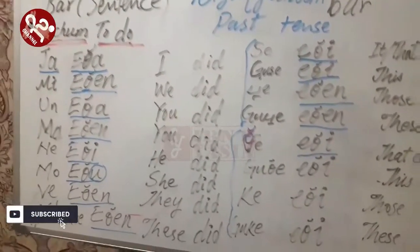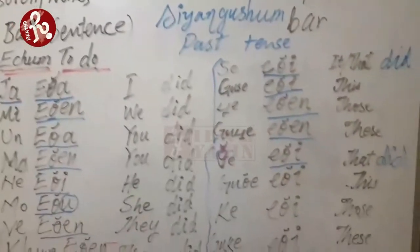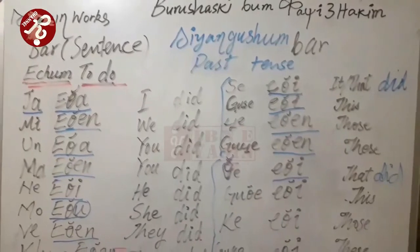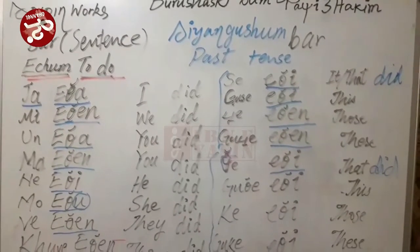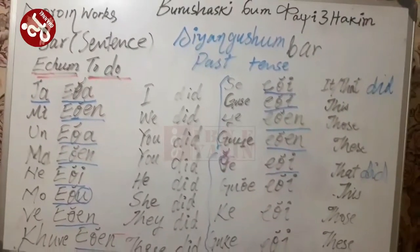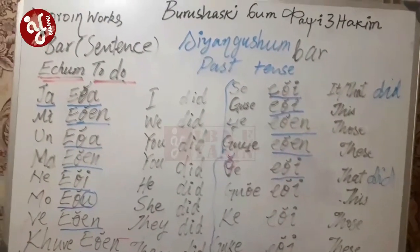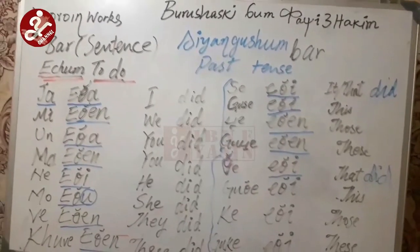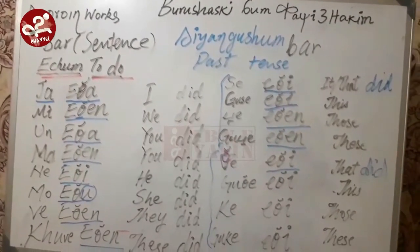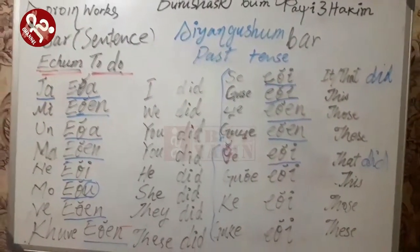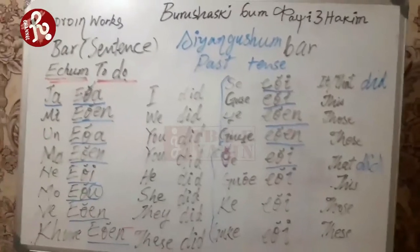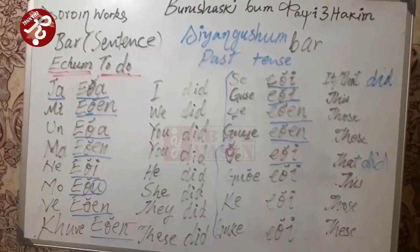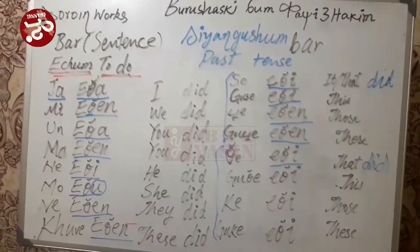So today we discussed the past tense, the 'dyangushum khen'. I will, as usual, post one screenshot of these conjugations. Next, we will discuss the future tense.